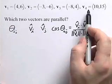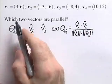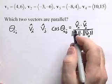So for each of these four vectors, we're going to look at the different pairs and find out what the cosine of theta is for each of those.